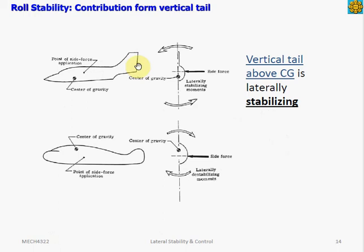The contribution from the vertical tail depends on the aircraft's center of gravity location. In general, the vertical tail above the CG is laterally stabilizing. If we sum up all the side forces the aircraft experiences, located above the CG along the aircraft centerline, the weight of the aircraft would roll it back the other way.